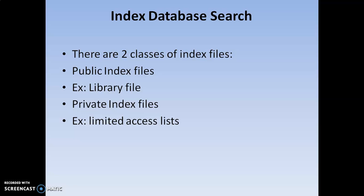The next is private index files. These are not publicly available like library files because they are designed to provide accessibility for a limited number of users only. That is why these are called limited access indexes. So in index database search, files are of two types: public index files and private index files.